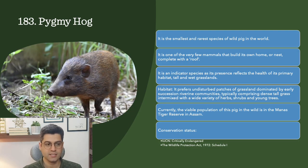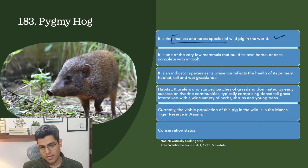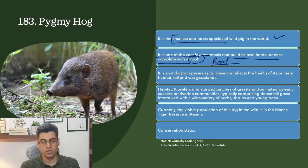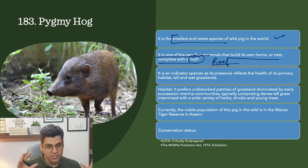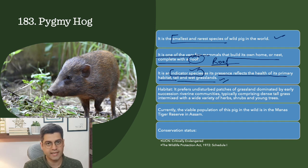The next topic is the Pygmy Hog. The Pygmy Hog is the smallest and rarest species of wild pig in the world. It is one of the very few mammals that build their own home or nest complete with a roof. It is an indicator species, as its presence reflects the health of its primary habitat — tall and wet grasslands.